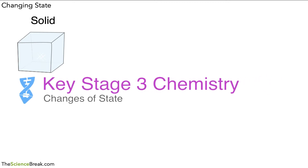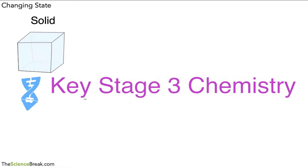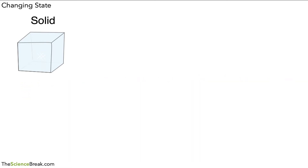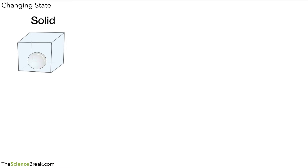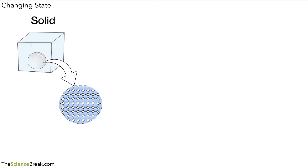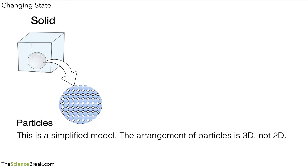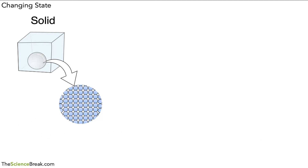Hello, this is a key stage 3 chemistry video looking at the changes of state. To help us understand this idea we have a solid such as ice. If we were to magnify many times part of this solid we would see that it is made of particles. Now remember, while these are the particles, this is just a model to show how the particles might be arranged.